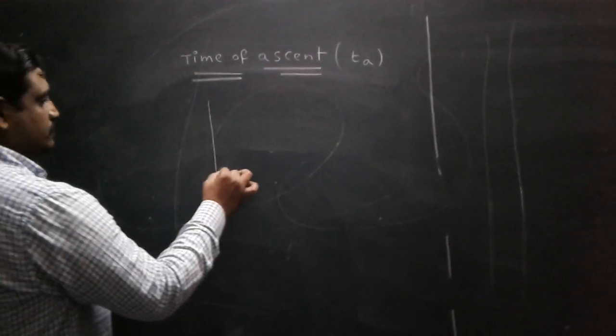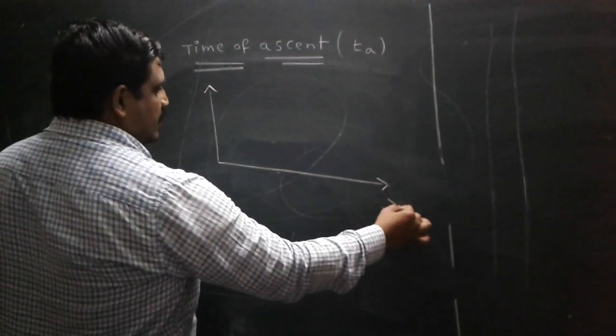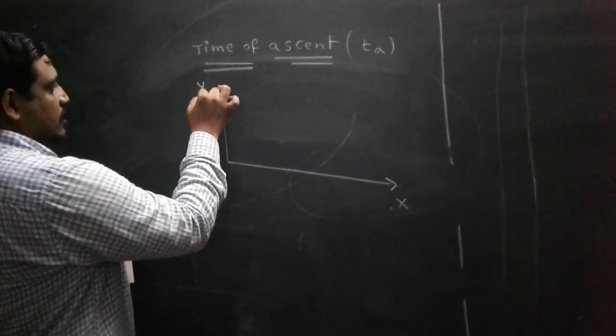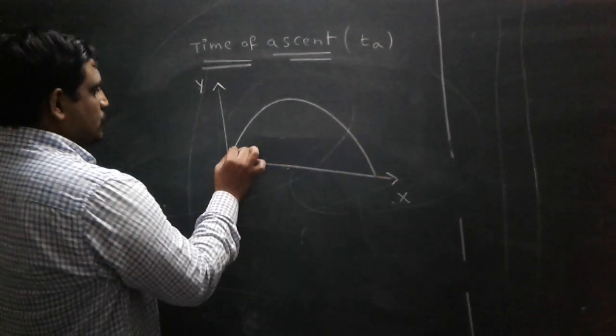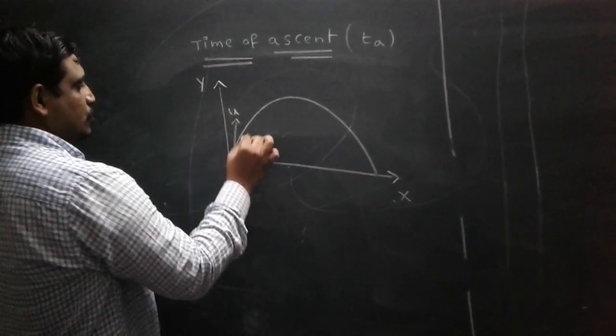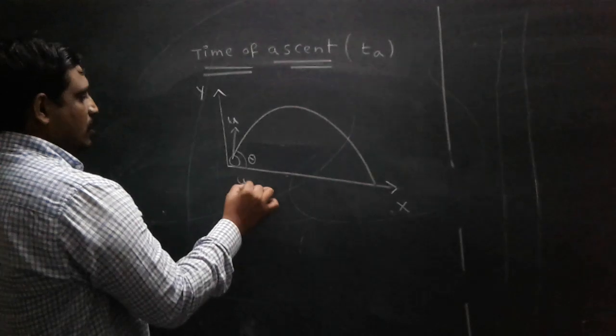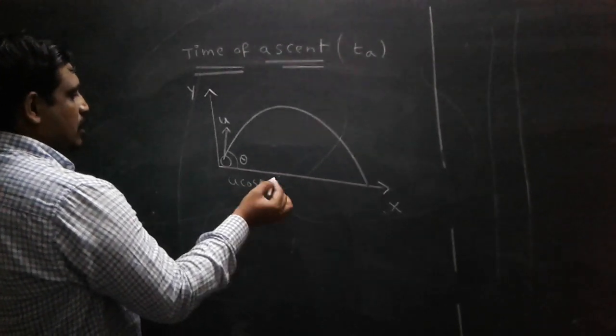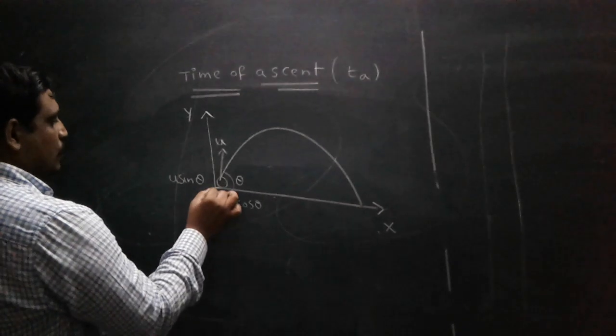Here is the projectile with x-axis and y-axis. The body is thrown and moves with initial velocity U. You resolve: U cos θ along the x-axis, U sin θ along the y-axis.